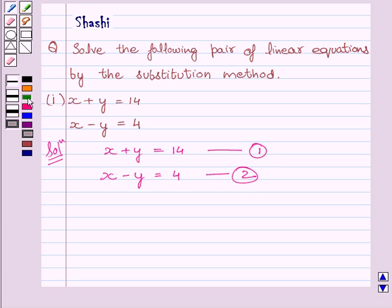Now, from equation 2 we get x is equal to 4 plus y.